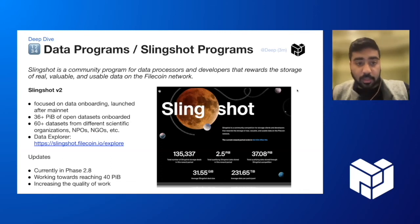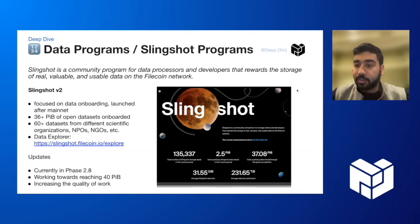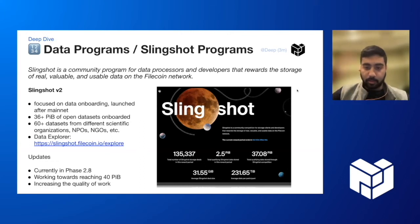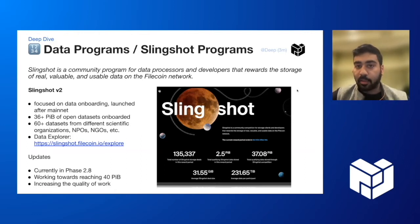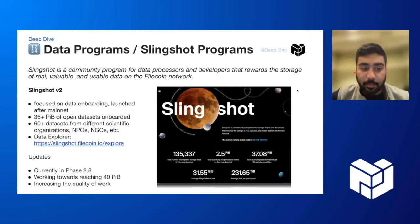Most of you are already familiar with what Slingshot is — a community program for processors, preparers, and storage providers to onboard lots of open, interesting data sets to the Filecoin network. We kicked this off right around Mainnet and are nearing — and actually crossing — 37 petabytes as of today of data onboarded over the course of the program. We're currently in phase 2.8, which will likely be the last or penultimate phase before we transition to something more interesting and unique.